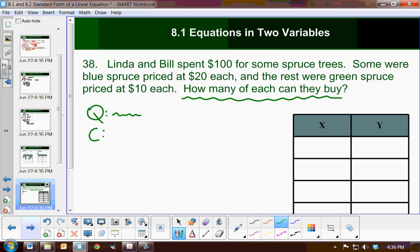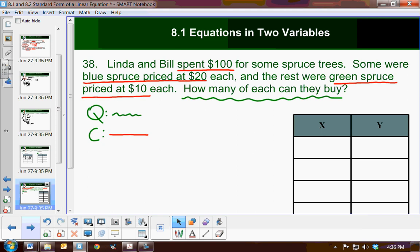Let's clarify the facts. I'm going to use red underlines for that. Linda and Bill spent $100. Some were blue spruce priced at $20. And the rest were green spruce, flat priced at $10. How many can they buy? Great.